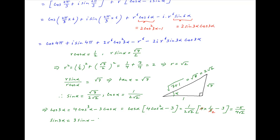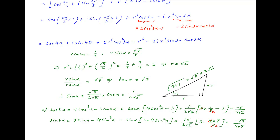Similarly, sin 3 alpha equals sin alpha times 3 minus 4 sin squared alpha, which equals root 7 upon 2 root 2 multiplied by 3 minus 4 times 7 upon 8. This simplifies to minus root 7 upon 4 root 2.